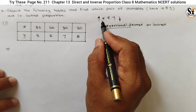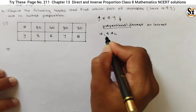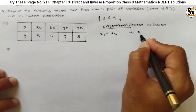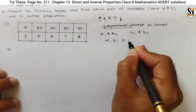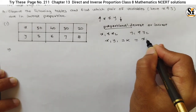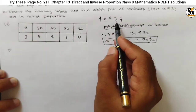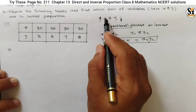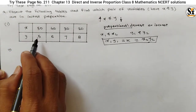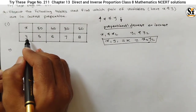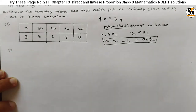The product of corresponding values must be constant. If x1 and x2 are two values of x and the corresponding values of y are y1 and y2, then x1 × y1 must equal x2 × y2, and this equals a constant k. This is the basic condition for inverse proportion. We must take the product of different values of x and their corresponding values of y; if the product is the same for all values, then x and y are in inverse proportion.